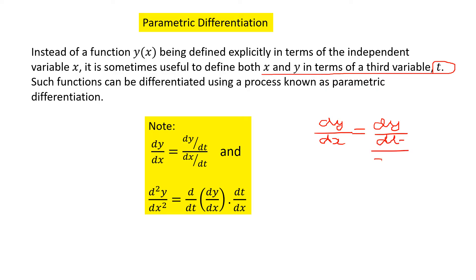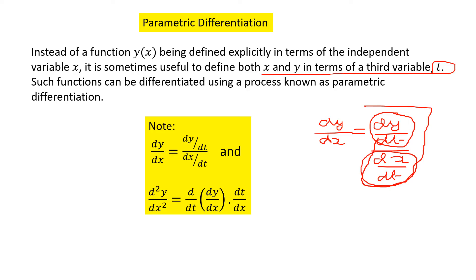Instead of finding dy/dx directly, we calculate dy/dt — the derivative of y with respect to t — and dx/dt — the derivative of x with respect to t. By dividing dy/dt by dx/dt we get the derivative of y with respect to x. So to find dy/dx we need two things: dy/dt and dx/dt. Simplifying these two gives the value of dy/dx. This is for the first order.